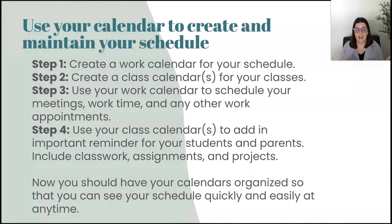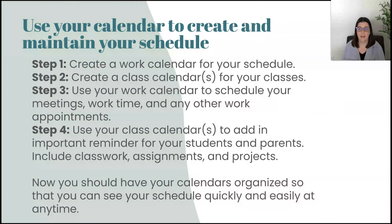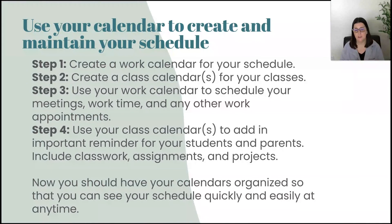Step number two: I created a classroom calendar — or calendars depending on how many classes I taught — one for each class. This calendar would be for me and for my students and parents; I could add things to share with them. On my work calendar for step three, I add meetings, work times, and any other specific appointments. In step four, I use my class calendars to add report reminders for students and parents, including classwork assignments and projects, making sure this calendar is available through a classroom hub or website.